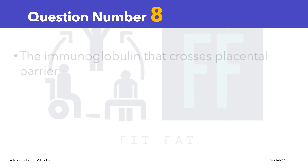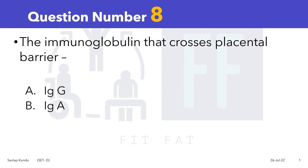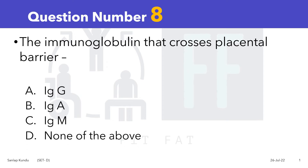Question number 8: The immunoglobulin that crosses the placental barrier. Option A: IgG, Option B: IgA, Option C: IgM, and Option D: None of the above.